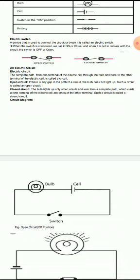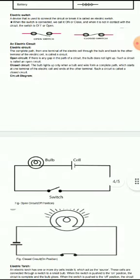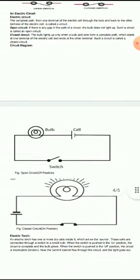lights up only when a bulb and wire form a complete path which starts at one terminal of the electric cell and ends at the other terminal. Such a circuit is called a closed circuit. Following are the